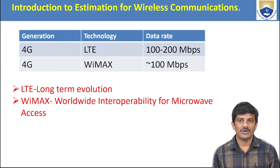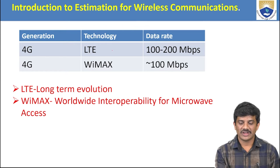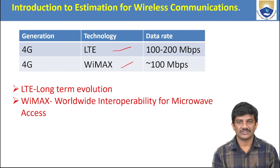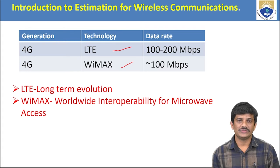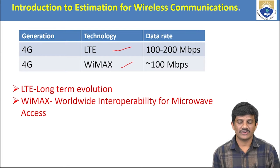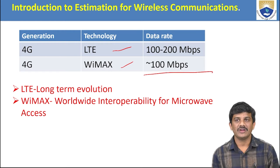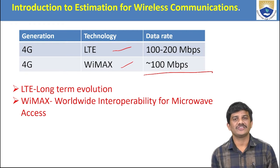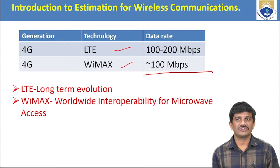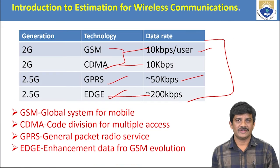In 4G, the technologies are LTE (Long-Term Evolution), WiMAX, and VoLTE. LTE provides a data rate of 100–200 Mbps, and WiMAX also provides approximately 100 Mbps data rate. These are the data rates across different technologies from 2G through 4G.